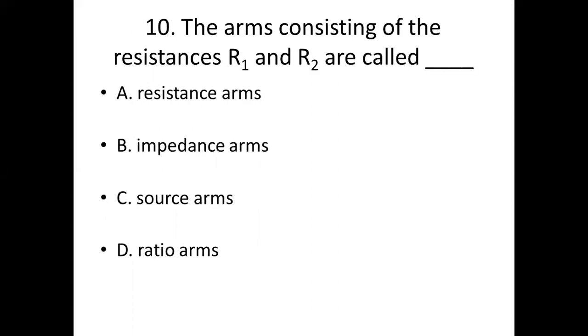Tenth bit. The arms consisting of the resistance R1 and R2 are called dash. Option A: resistance arms. Option B: impedance arms. Option C: source arms. Option D: ratio arms.